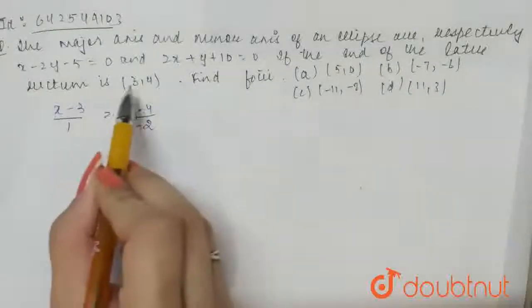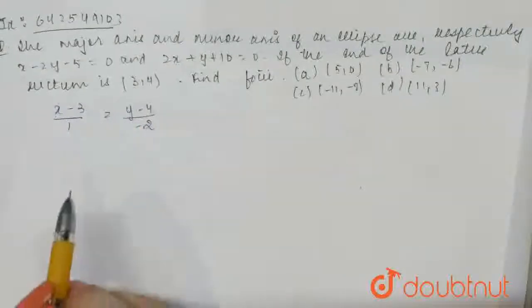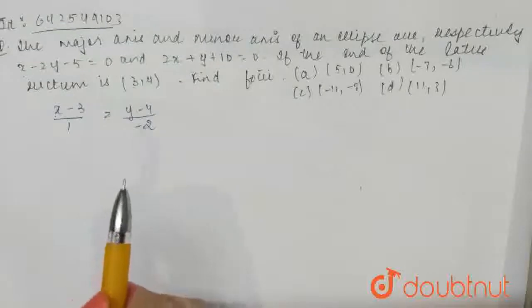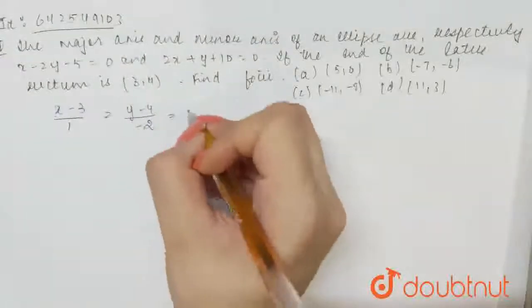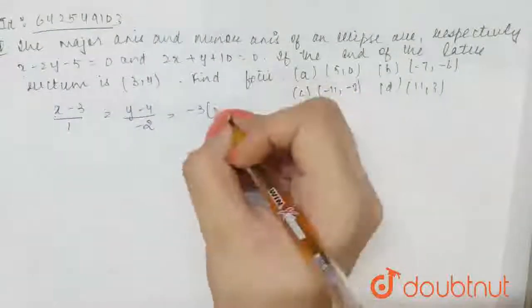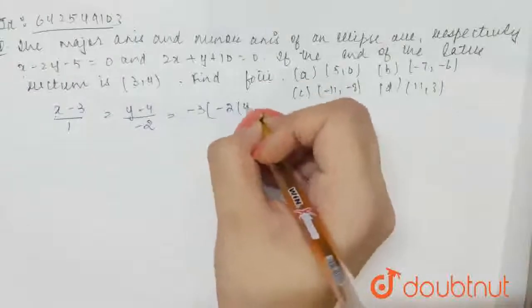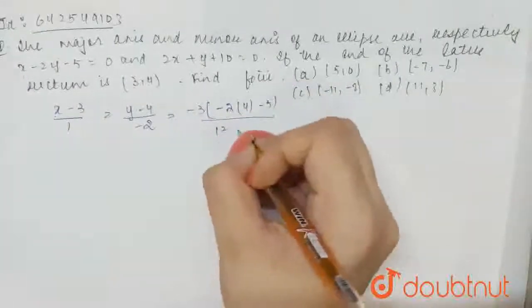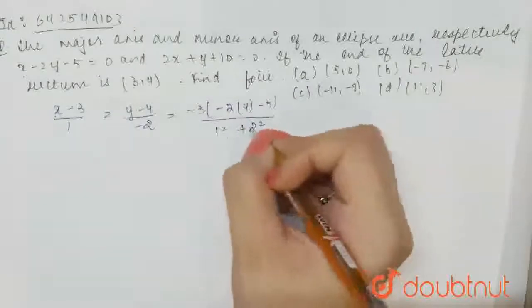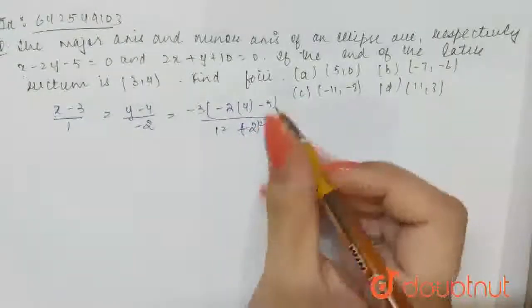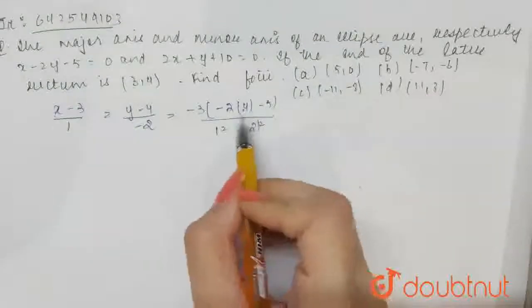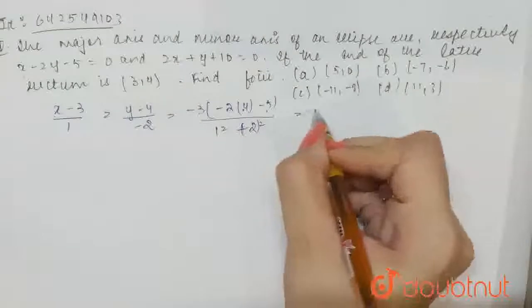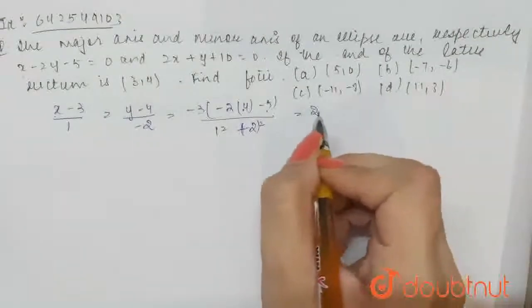So, x minus 3 divided by 1 equals y minus 4 divided by minus 2. Now, we can write this as minus 3 into minus 2, which is into 4 minus 5, and this will be 1 square plus minus 2 whole square. So, if you calculate this, this will be minus 8, this will be minus 5, minus 13, and this will be 2.